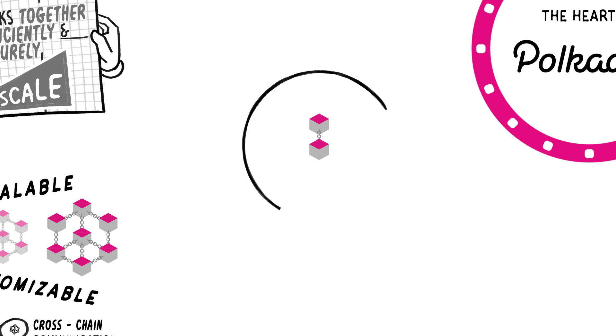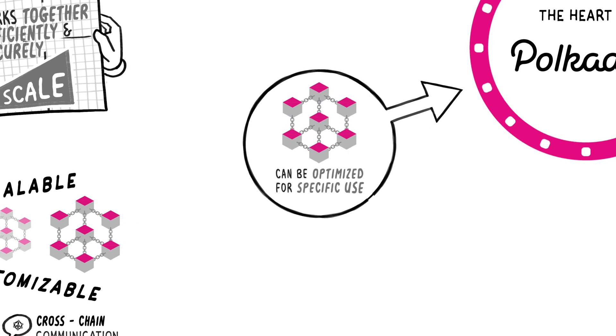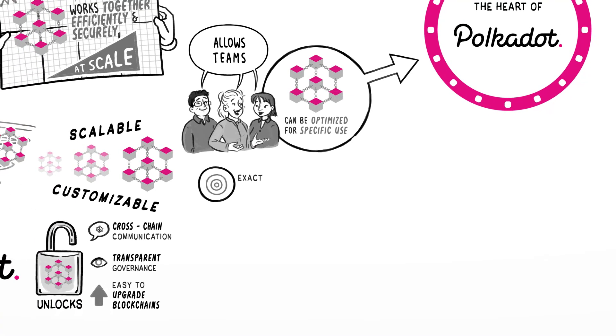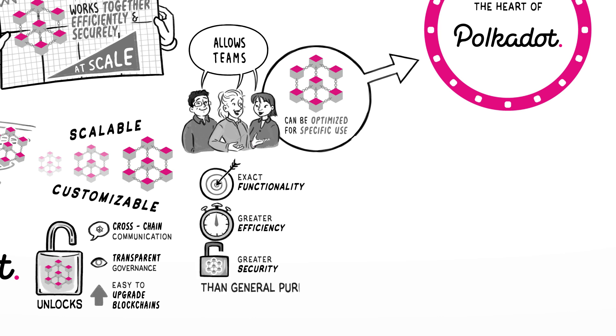Each blockchain connected to the relay chain can be optimized for a specific use case. This allows teams to incorporate exactly the functionality they need, and offers greater efficiency and security than building on a general purpose blockchain. Teams can also drastically reduce the build time of their custom blockchain by building it with Substrate, our modular development framework.